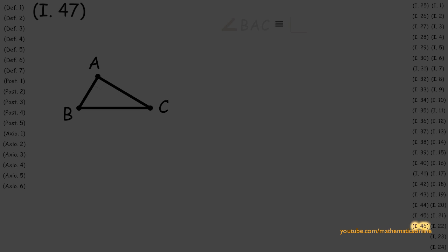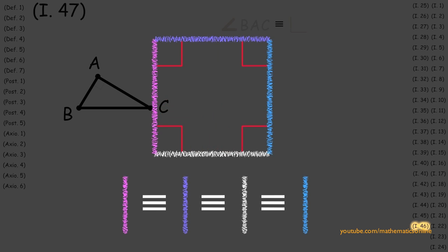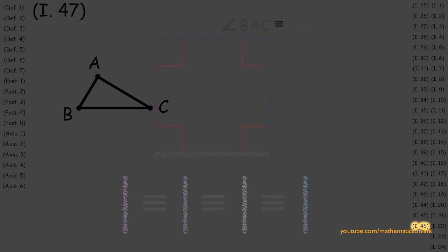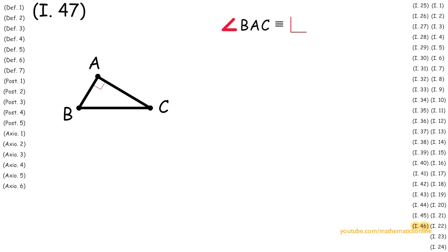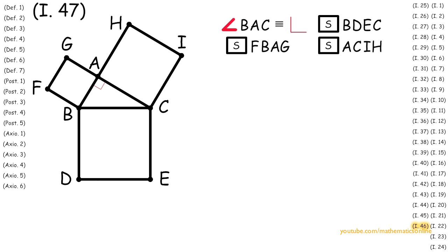Now from Proposition 46, we proved that on any line we can always construct a square. Therefore, on line BC we construct a square, and on lines AB and AC we construct two other squares.